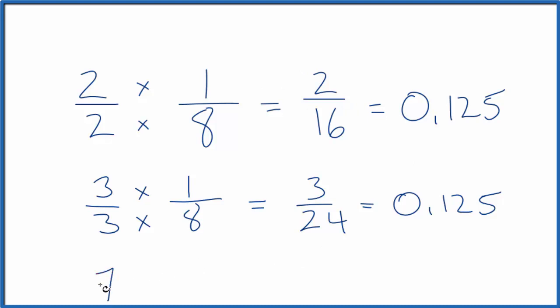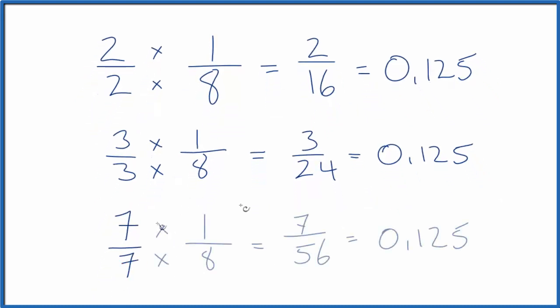Let's try one more. How about seven over seven? That gives us seven-fifty-sixths, another equivalent fraction. And again, all of these equivalent fractions are the same value, zero point one two five.